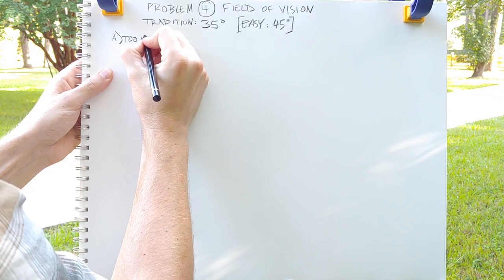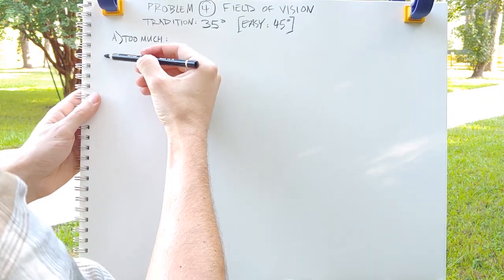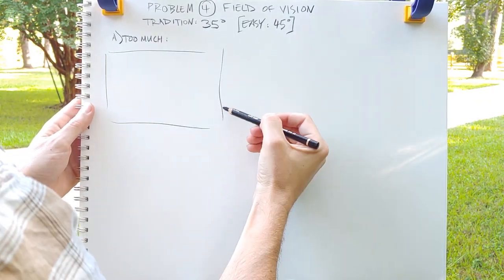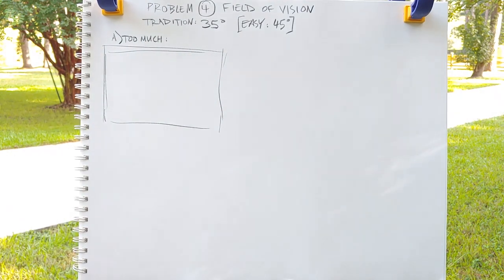The easiest way to measure it is 45 degrees. You just hold your hands out at a 45 degree angle and that kind of delineates your boundaries.